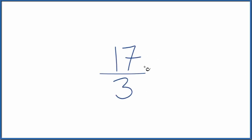All right, so here's how you write the fraction 17 thirds as a mixed number in simplest terms.